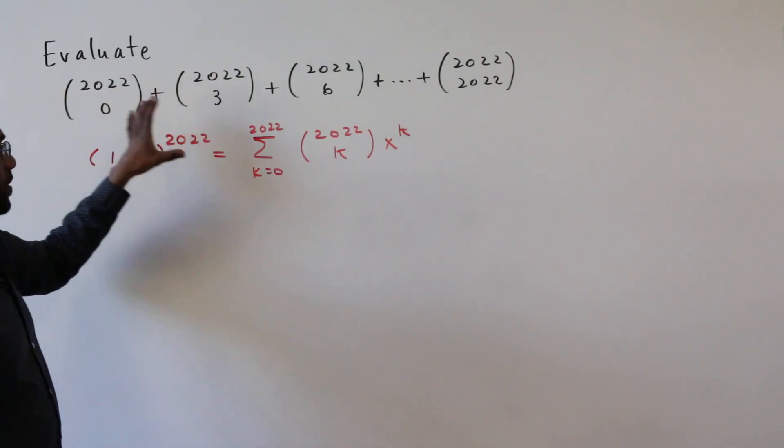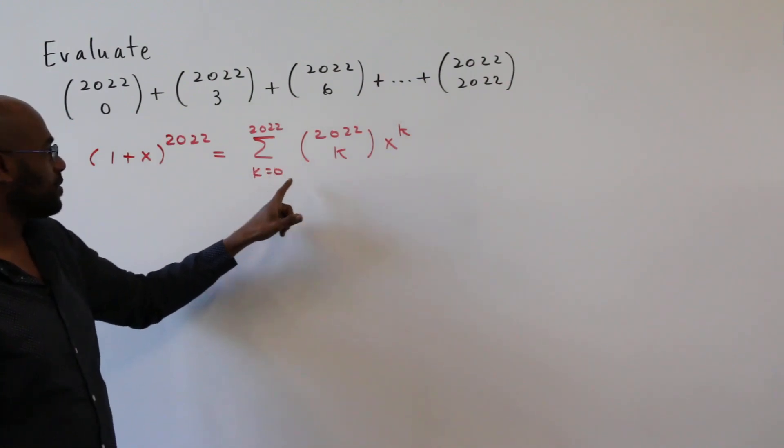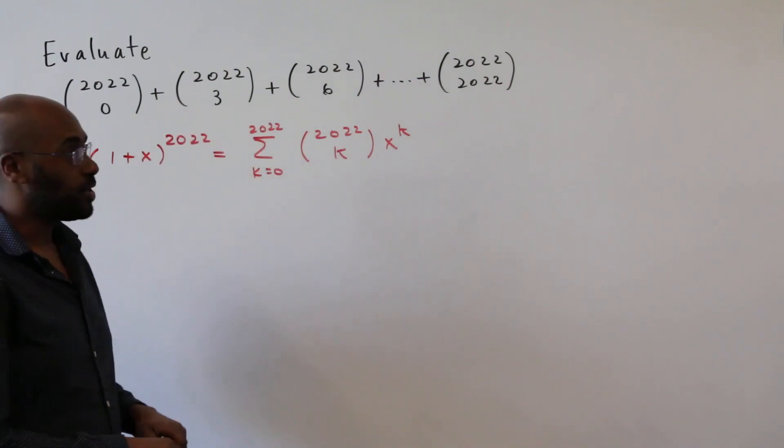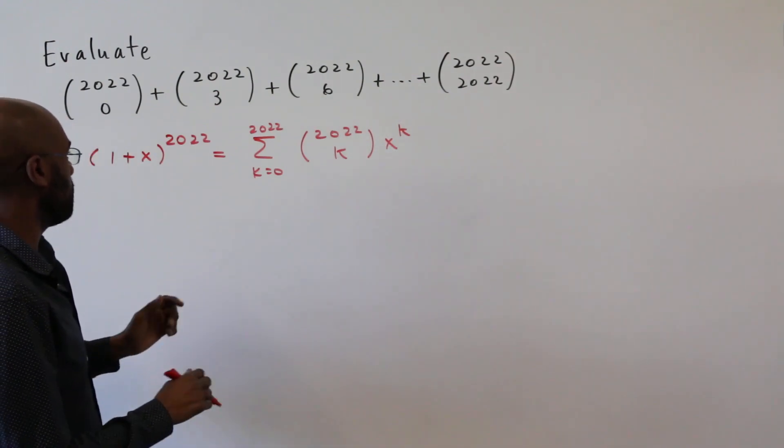Now the thing is, this doesn't fit this sum here because here we're summing over all possible k instead of the ones that are multiples of three. So we're going to have to find a way to manage with that.